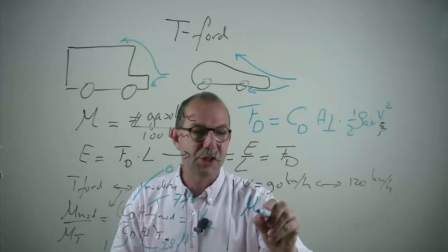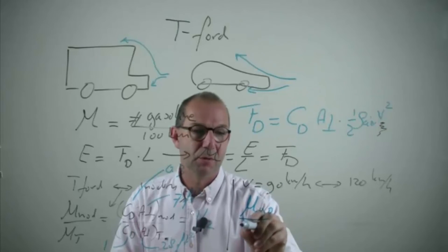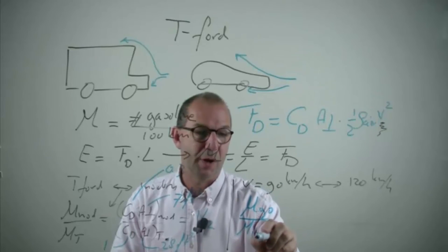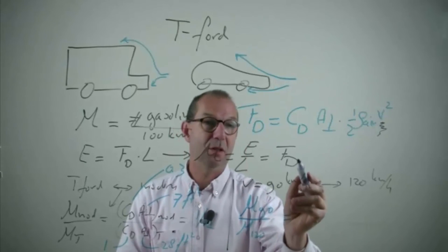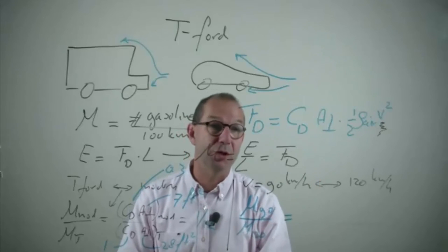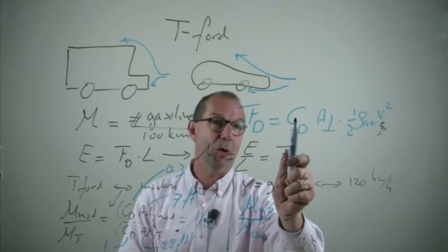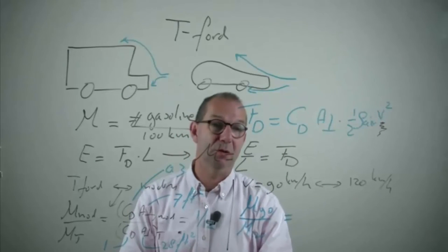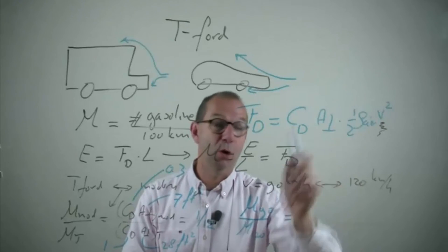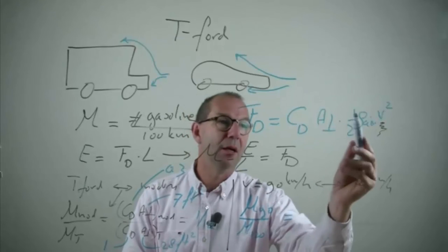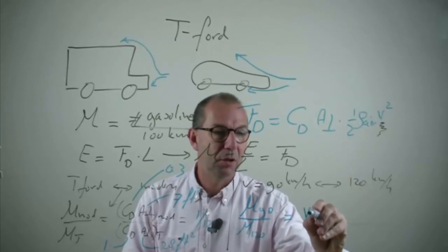If we compute the mileage at a velocity of 90 versus a velocity of 120 km per hour for the same car, what we see is that it is the ratio of the drag forces at these velocities. But now CD and A perpendicular drop out as it's the same car, half rho drops out as it's the same air, and you get the square of the velocities.